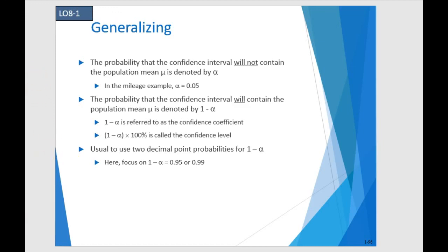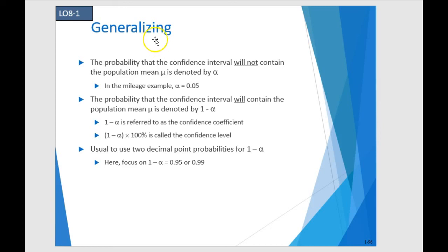So if we look at this, the probability that the confidence interval will not contain the population mu is denoted by alpha. Alpha is this new number that we're going to be talking about and it's Type 1 error. I don't generally refer to it as Type 1 error, but I just wanted to mention it because that is what it is. Type 1 error — and then beta is Type 2 error. Alpha is essentially the probability that we draw a conclusion and it's wrong. Naturally we want that probability to be very, very low.